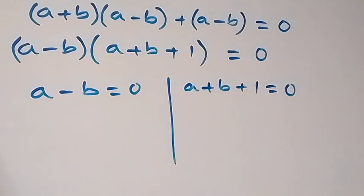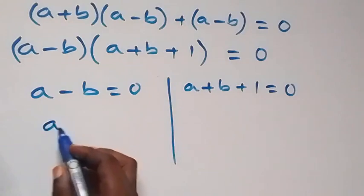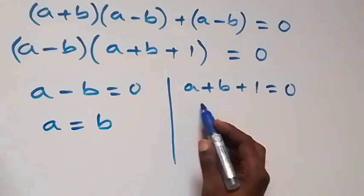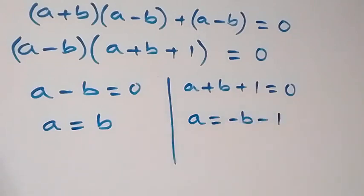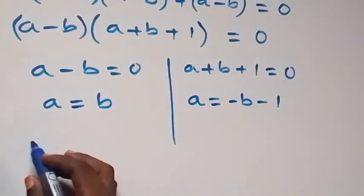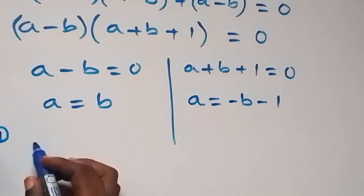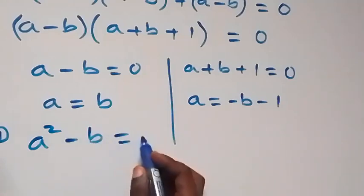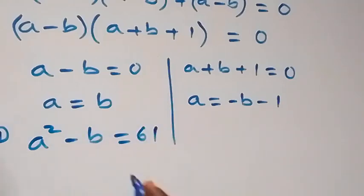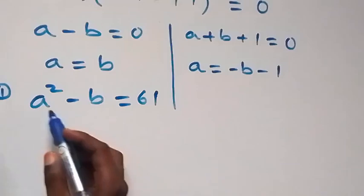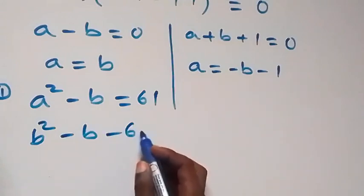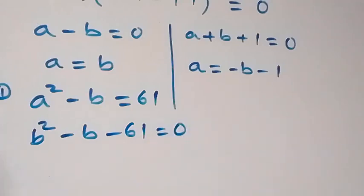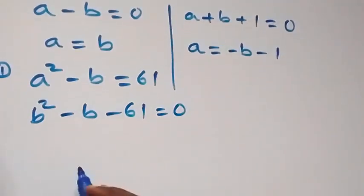If you are enjoying this class, give a thumbs up and click the subscribe button for more videos. Now for Case 1, A equals B. Recalling from equation 1 that A squared minus B equals 61, since A equals B we substitute to get B squared minus B minus 61 equals to 0.